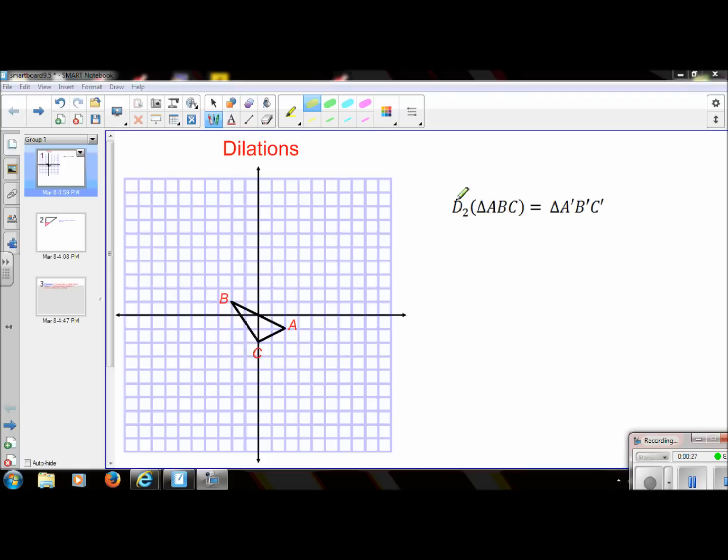In our notation, D always stands for dilation. We're going to dilate triangle ABC by a scale factor of 2. This number right here I have highlighted because that is an important part of this transformation notation. I have put the coordinates right here of triangle ABC.